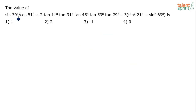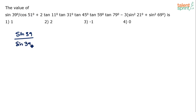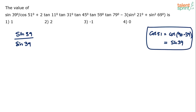Next problem: find the value of sin39/cos51 + 2·tan11·tan31·tan45·tan59·tan79 - 3(sin²21 + sin²69). For the first term, cos51 = cos(90-39) = sin39. So sin39/cos51 becomes sin39/sin39 which equals 1.